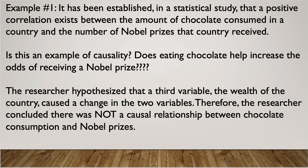Another example: it has been established in a study that a positive correlation exists between the amount of chocolate consumed in a country and the number of Nobel prizes that the country receives. This example is just telling us that there's a correlation — so remember, that's just a relationship. There is a relationship between the amount of chocolate and the number of Nobel prizes.